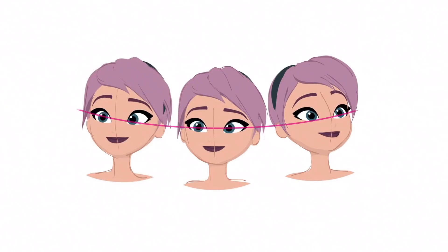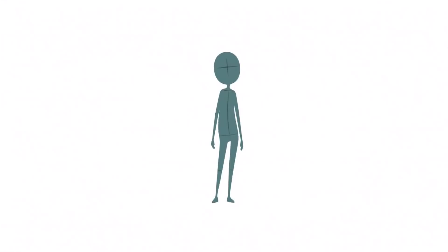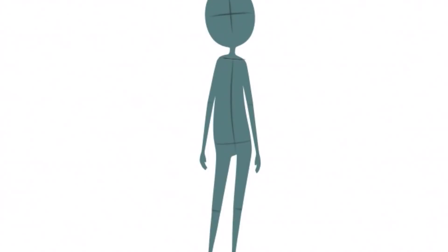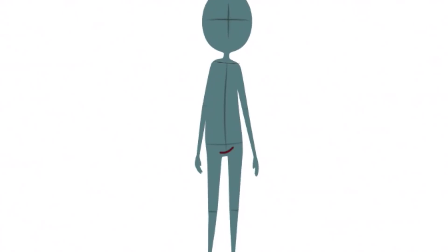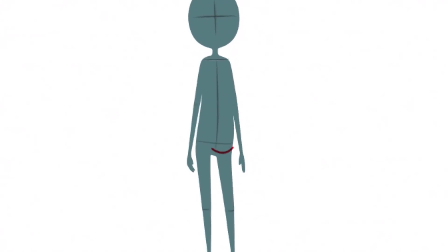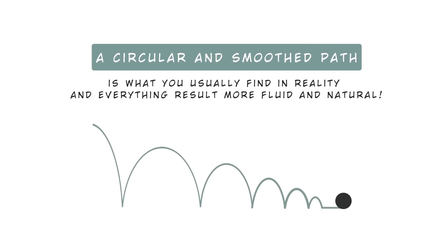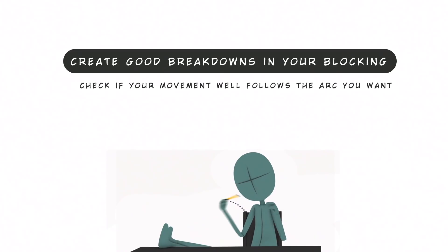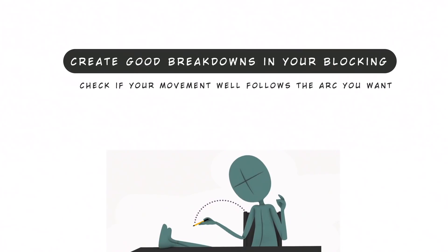A head turn creates an arc, a mouth opening, a change in weight — for all these situations, you should keep attention to the visual path created by the movement and adjust it until you reach a nicer result. A circular and smooth path is what you usually find in reality and it results in more fluid and natural animation. This requires good breakdowns in your blocking and particular attention during the polishing of your animation.